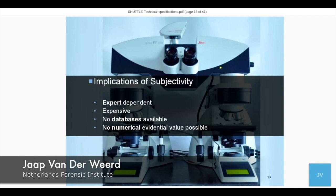Because many investigations are subjective — somebody is looking through the microscope — it's very difficult to make databases. You could store color observations in databases, but they are not accurate: you can store a color as 'blue,' but there are several kinds of blue that are distinctly different. So it's very difficult to make databases based on subjective information. And because we don't have the right databases, it's very difficult to establish numerical evidential value. The question is: maybe you find a match between a suspect and a victim's trace, but what does it say? Is the match based on chance?